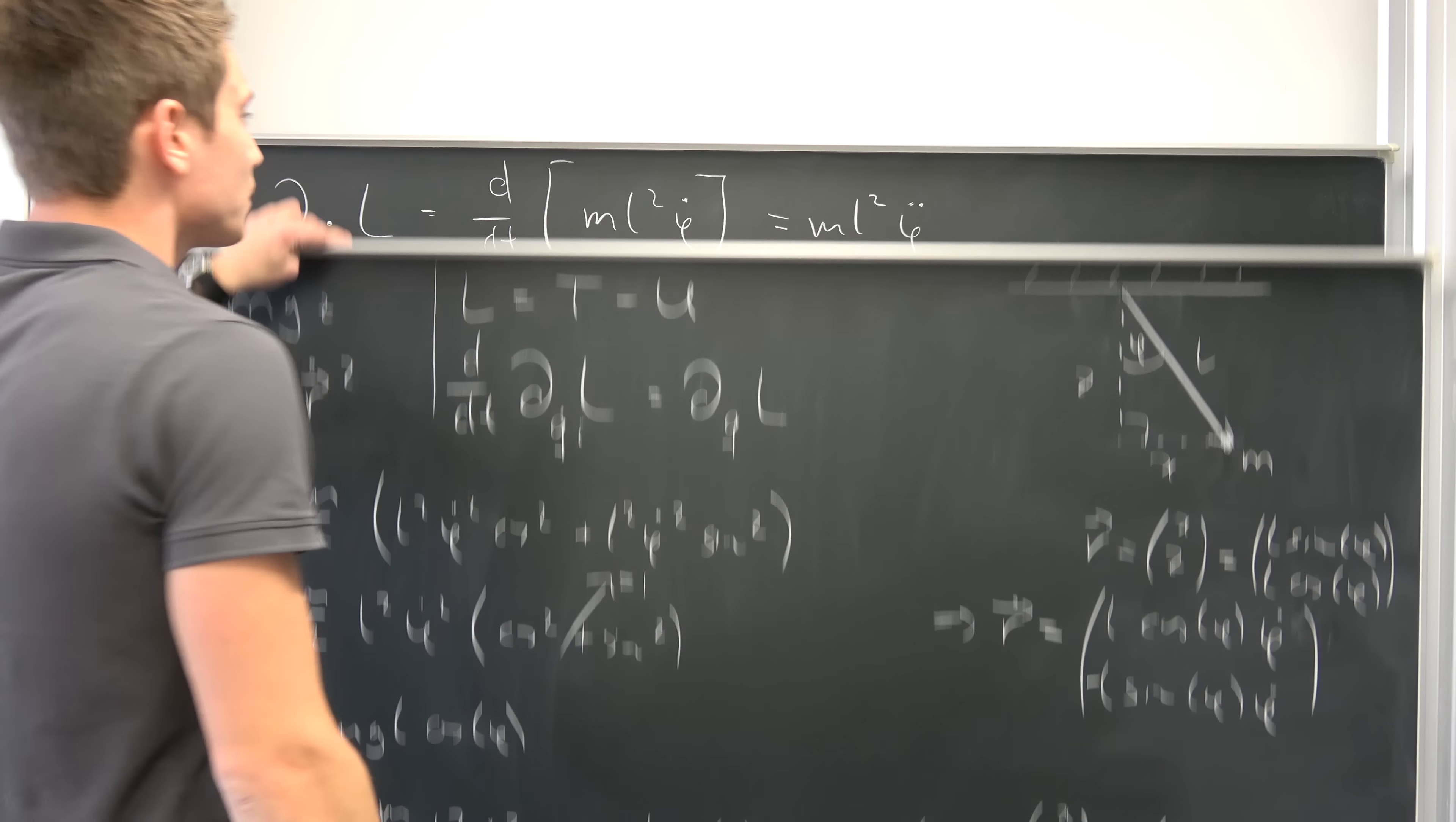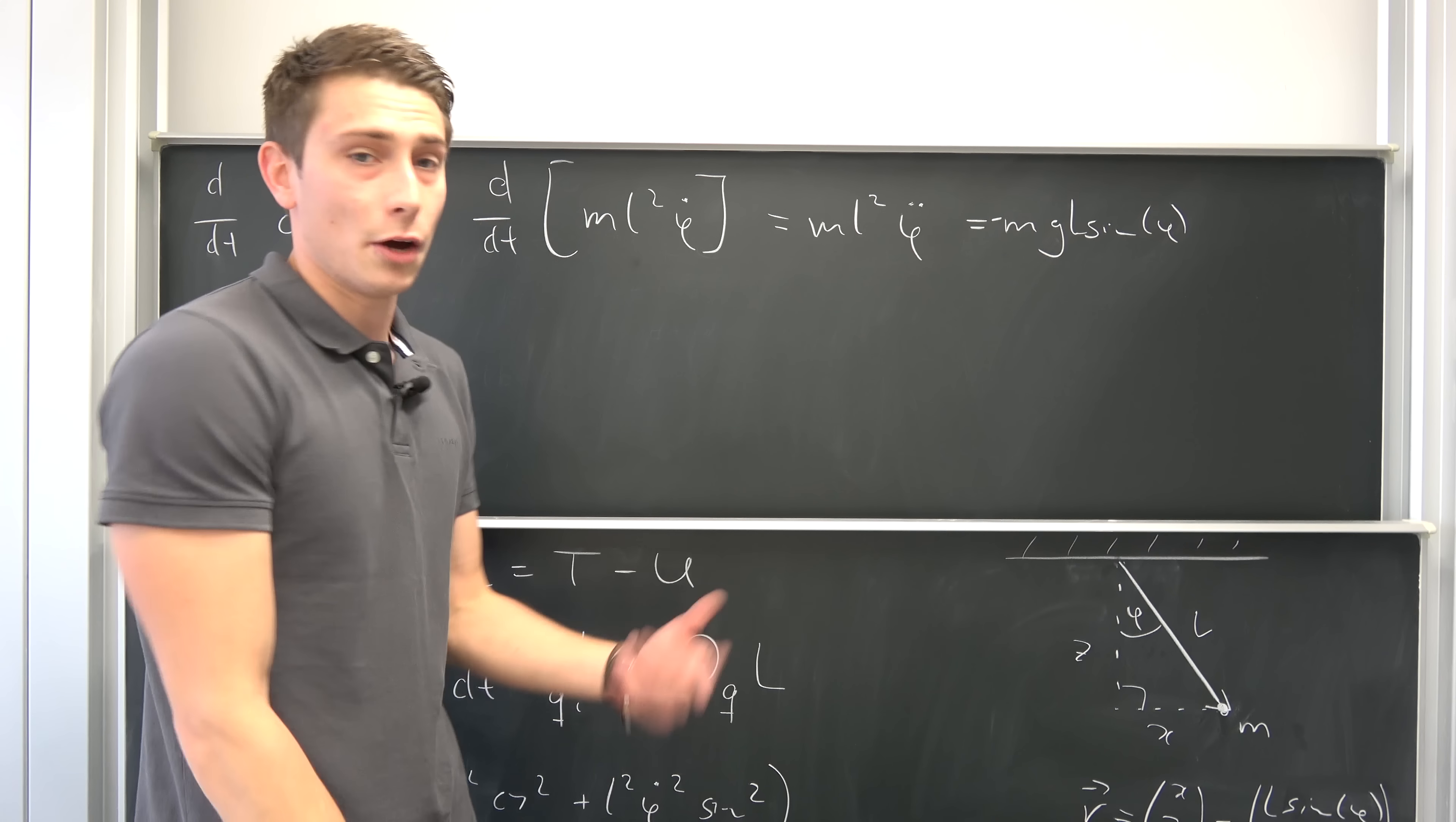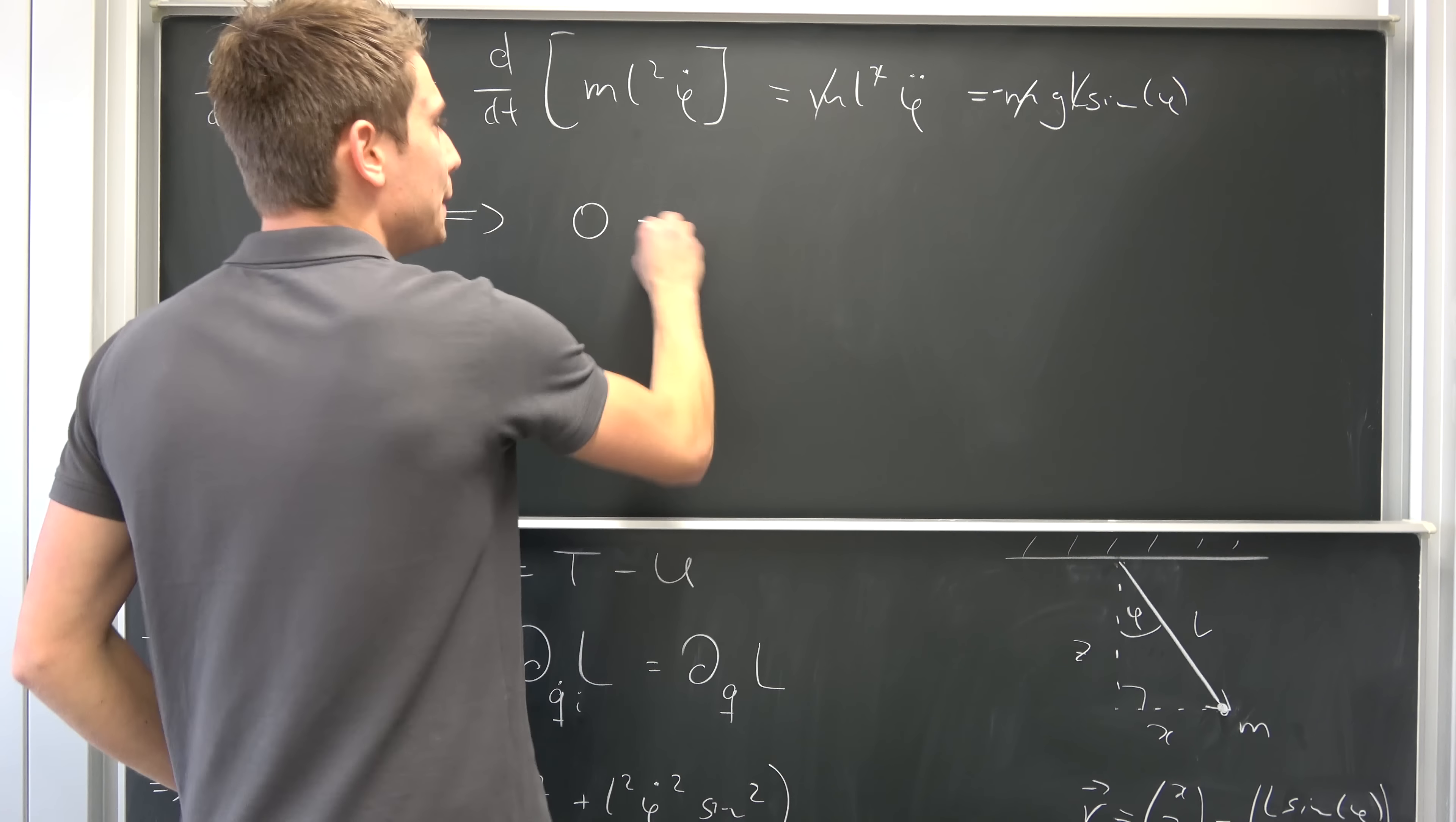So we have M times G, negative sine, sine of phi, and we also had our L right here. Yeah, I don't want to forget that. And now you can see we can cancel stuff out. So this M is going to cancel out, we can just add this whole term on both sides, we can cancel out the L's right here. So we are going to end up with zero being nothing but phi double dot. That's an ugly looking phi.